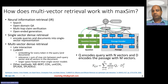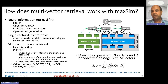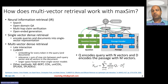You can write this MaxSim score using a matrix formulation. Here, Q is the matrix encoding the query with n different token vectors, and D is the matrix encoding the passage with m different token vectors. A maximum is computed for every query vector Q_i, and then summed over all query vectors to get the overall relevance score between the query and the document.